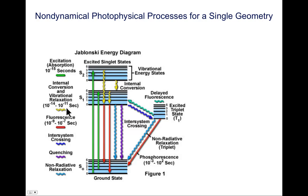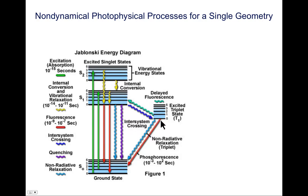You can emit a photon and go back down to the ground state — that's fluorescence, with its characteristic timescale. Alternatively, you can inter-system cross, going from a singlet state to a triplet state, which is lower in energy. Once in the triplet state you can go back to the singlet — that needs to be thermally activated since you're going uphill. You can also non-radiatively relax if you're close enough to the ground state, perhaps coupling with vibrational or rotational quanta.